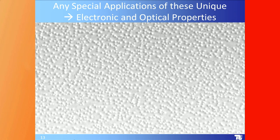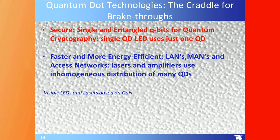Are there special applications of these unique electronic and optical properties? I will talk about: security — fabrication of single and entangled qubits for quantum cryptography; single quantum dot LEDs using just one quantum dot; and then using many quantum dots for faster, more energy-efficient local area, metropolitan, and access network lasers and amplifiers. We could also add visible LEDs and lasers based on GaN, but there are many sessions on that subject here at Photonics West.